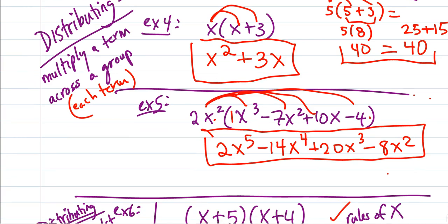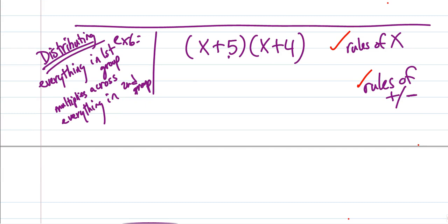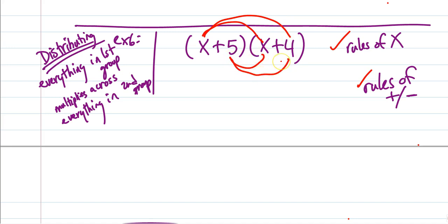What happens when I have more than one term? It's still distributing, but it changes a little bit. We take everything in the first group and multiply it across everything in the second group. We distribute each term in the first group — take that x first and distribute it to both terms, then take the second term, the 5, and distribute it across both terms.